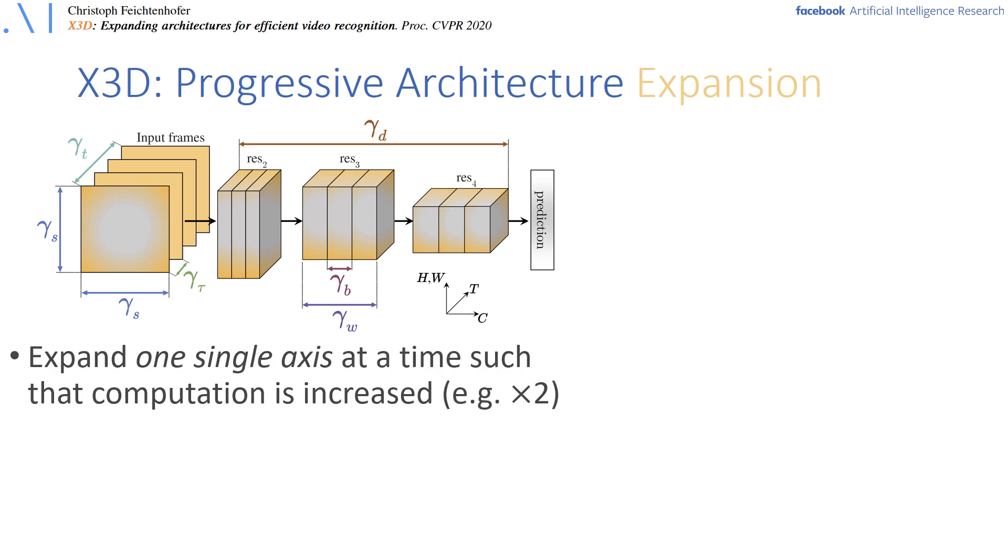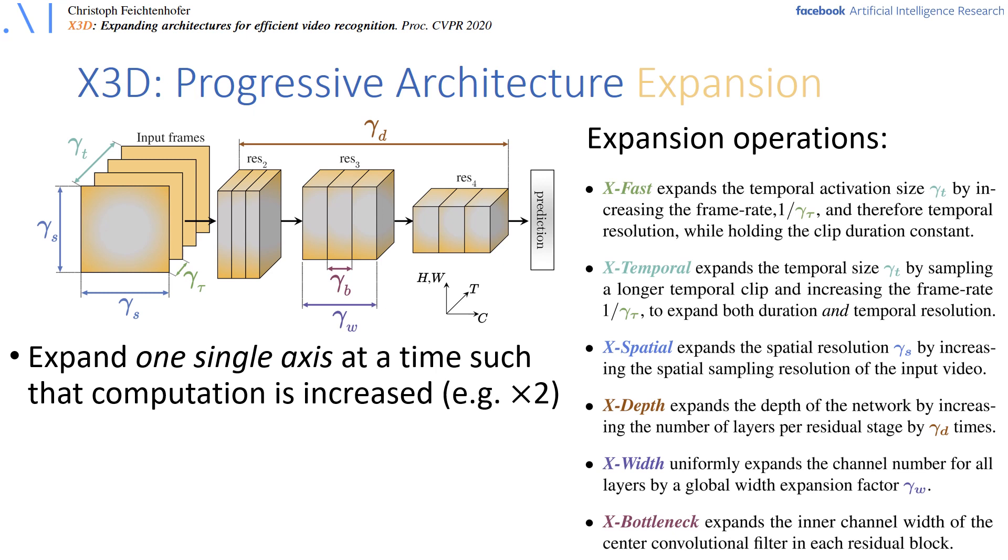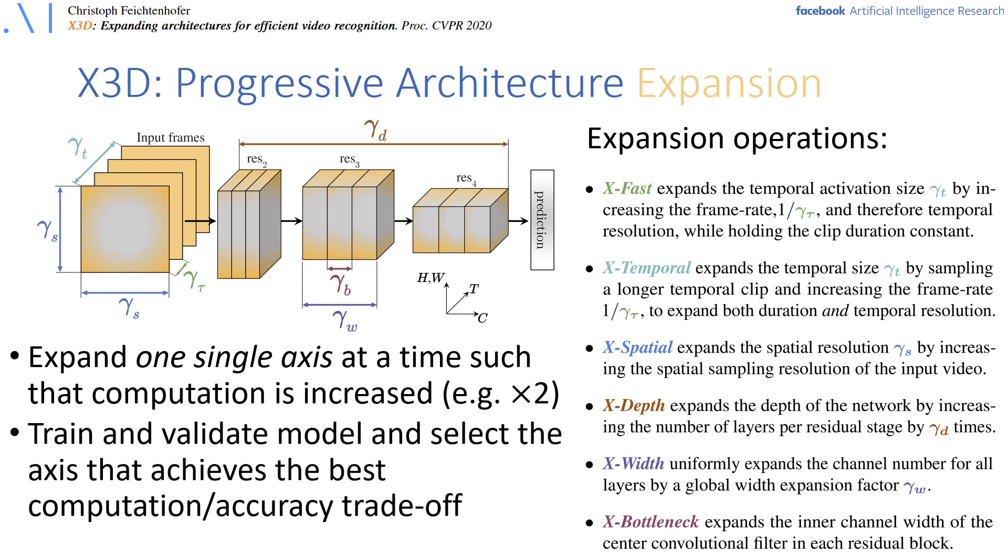To generate X3D, which is expanded across multiple axes for good computation accuracy tradeoff, the idea is to progressively expand this tiny base 2D image architecture into spatiotemporal one by expanding these multiple possible axes. We have six expansion operations that expand each across one of these axes. The idea of the expansion is to progressively increase the computation by, for example, 2x by expanding one axis at a time, then train and validate the resultant architecture and select the axis that achieves best computation accuracy tradeoff. The process is repeated until the architecture reaches a desired computational budget.